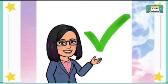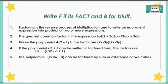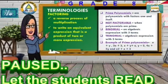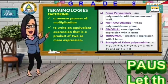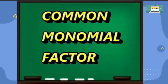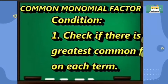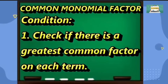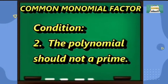Let us check your answers in the pretest. Let us have the following terminologies. The first type of factoring to be discussed in this module is common monomial, and it is anchored to factoring by grouping. There are two conditions in using factoring common monomial. One, check if there is a greatest common factor on each term. Two, the polynomial should definitely not be a prime. Listen carefully to the given examples.